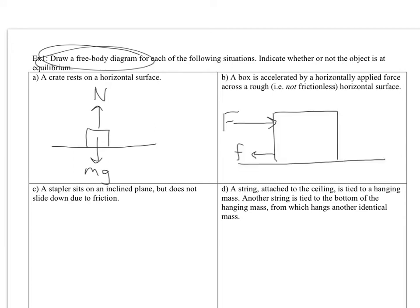Alright, let's consider B a little bit. Right here, this is wrong. Okay, it has some good things, right? We said it's accelerated by a horizontally applied force, so I've got that there, that's my big F, across a rough, that is not frictionless surface. Okay, so that's my little f there in the opposite direction.